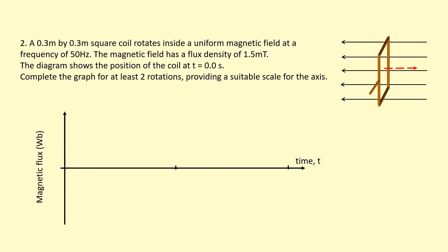Example 2: a 0.3 metre by 0.3 metre square coil rotates in a uniform magnetic field at a frequency of 50 hertz. The magnetic field has a flux density of 1.5 milli-Teslas. The diagram shows the position of the coil at t equals 0 seconds. We need to complete the graph for at least two rotations. At the position shown, we have maximum flux going through the coil — the angle is zero degrees so cosine equals one, giving the maximum possible value.